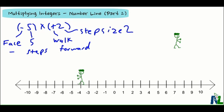One step, two steps, three steps, four steps, five steps to end up at negative 10.